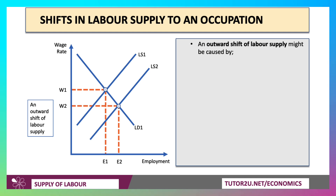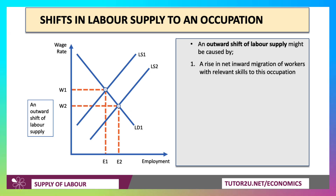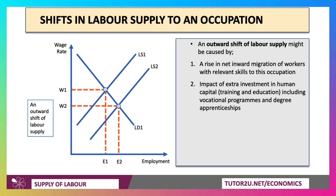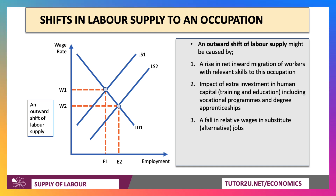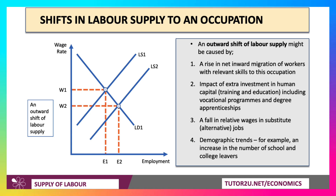Labour supply normally slopes upwards, but the curve can shift. Our diagram shows an outward shift of labour supply from LS1 to LS2, caused by a number of factors. It could be an increase in net inward migration of workers with relevant skills — for example, an increase in work visas for data scientists. Investment in human capital, training and education, including vocational programmes and degree apprenticeships, also plays a role. A fall in relative wages in other industries may cause people to move from occupation A into occupation B. Demography and population trends can also have an effect — for example, a bulge in school and college leavers in a particular age group.